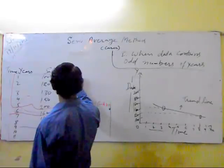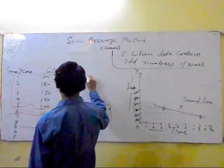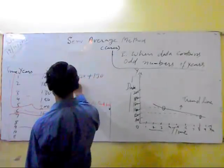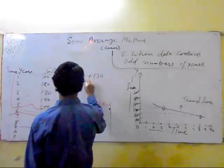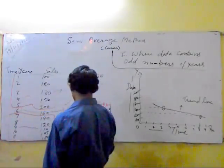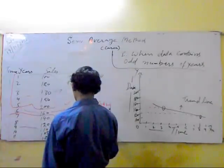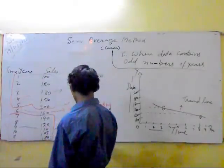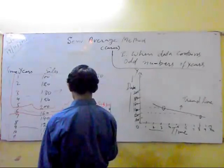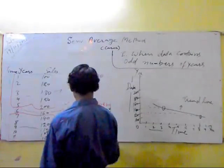100 plus 120 plus 130 plus 150 plus 200 divided by 5. Now we are taking 140, 120, 110, 105 and 100 divided by 5.